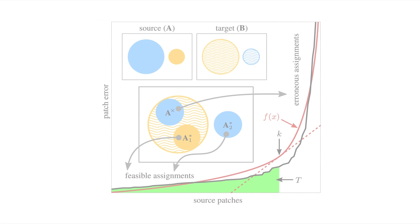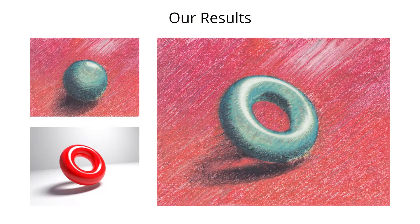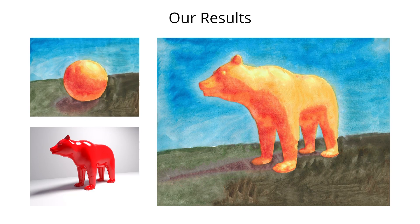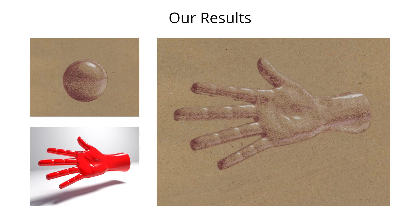To address this problem, we present a new synthesis scheme with adaptive utilization enforcement, which automatically balances utilization with appearance space error to produce a visually rich result, faithful to the exemplar style. Together, these two contributions facilitate high-quality rendered image stylization.